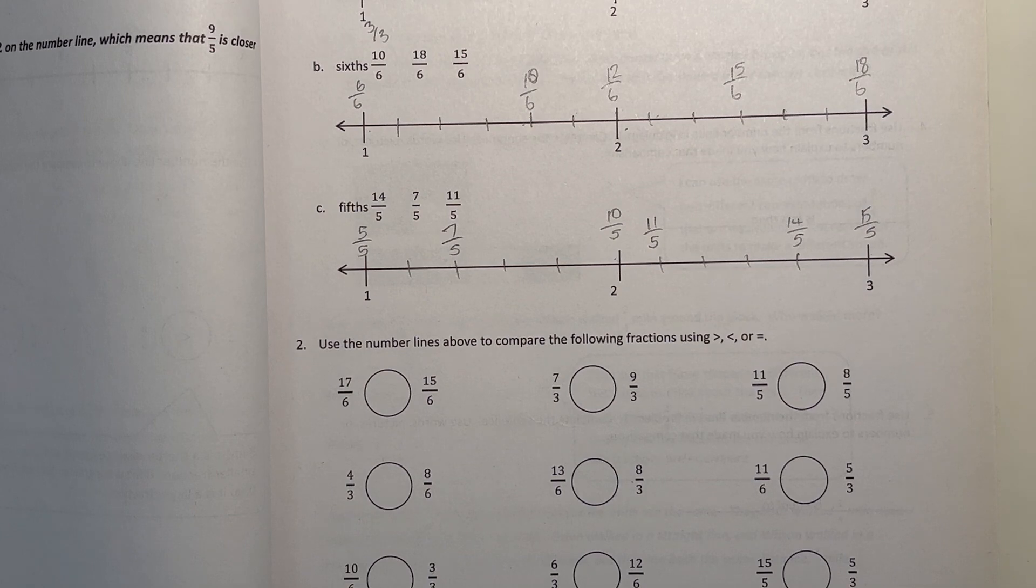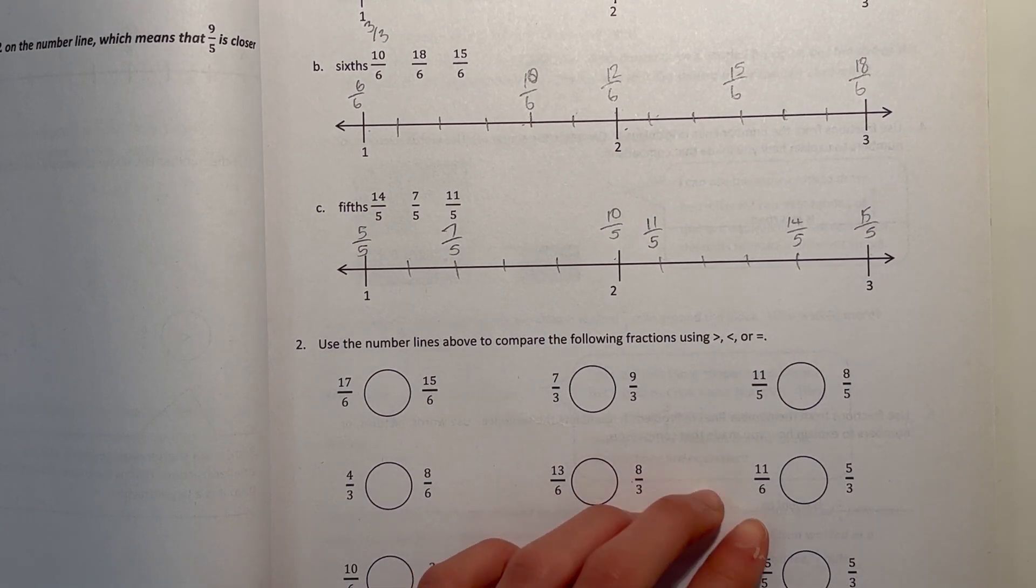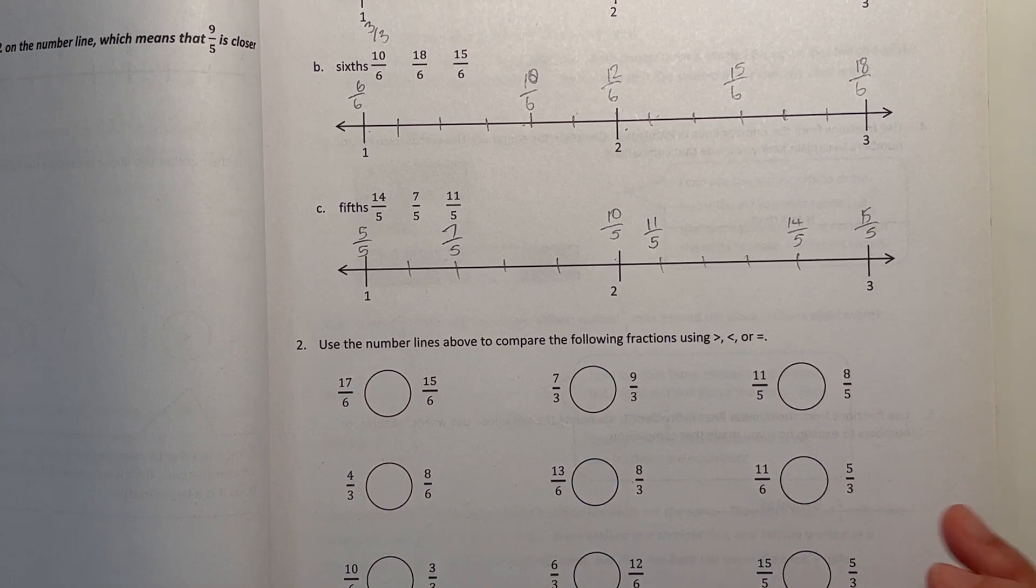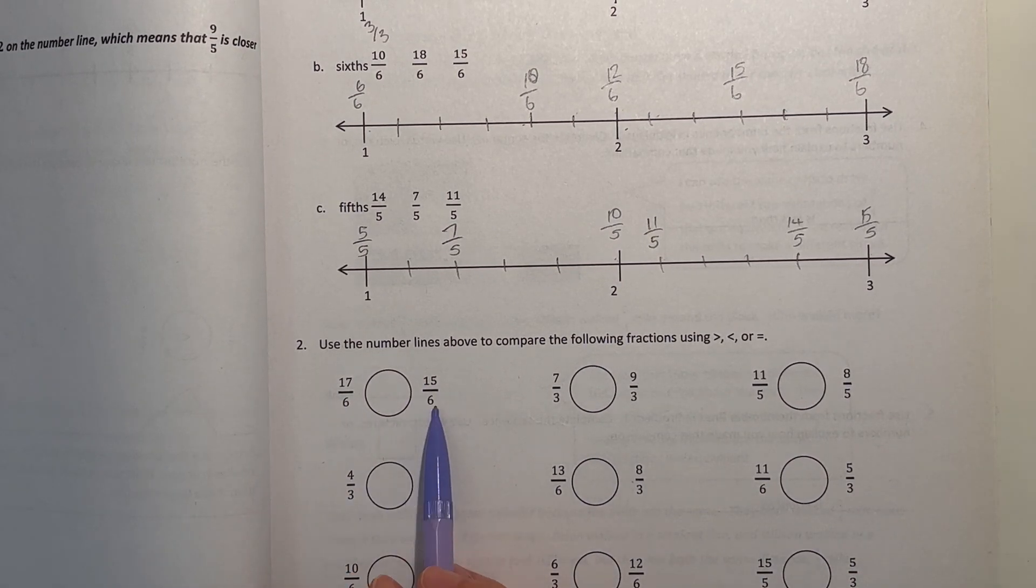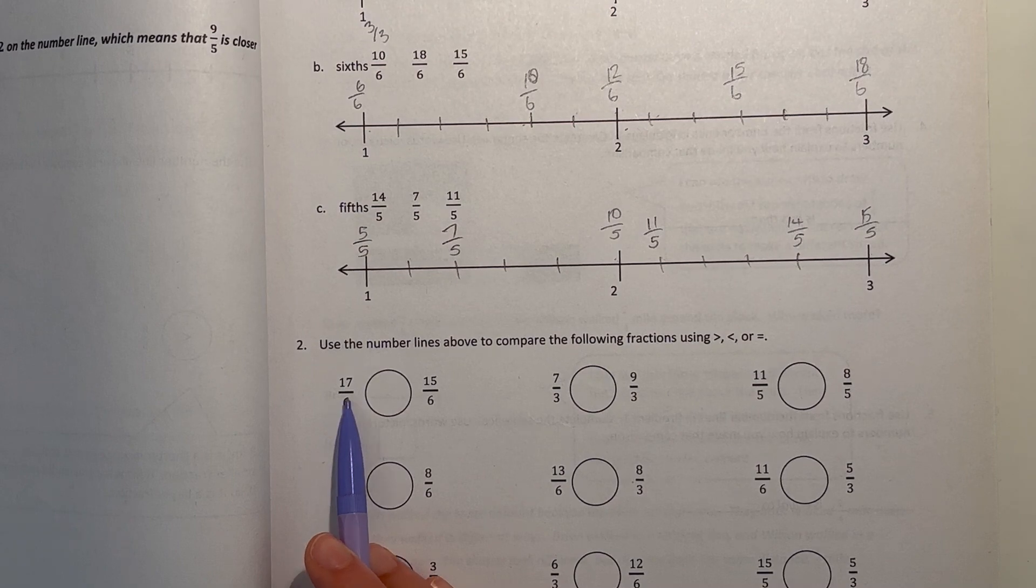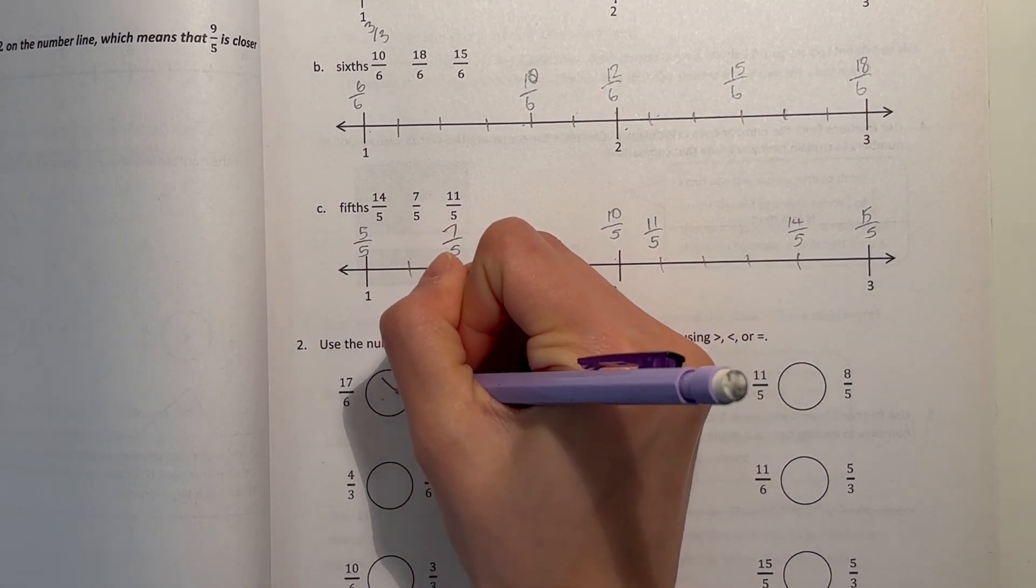Alright, now number 2. Use the number lines above to compare the following fractions using greater than, less than, or equal to. So 17 sixths and 15 over 6. The denominator is the same. So we look at the numerator. 17 is greater than 15. So that's greater than.